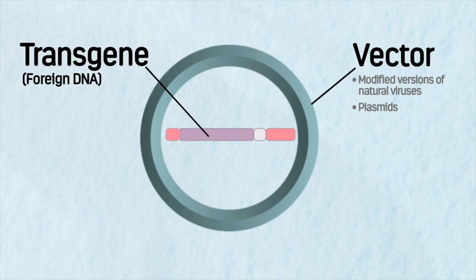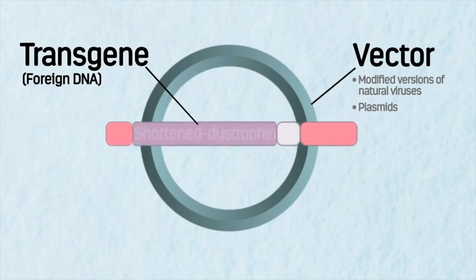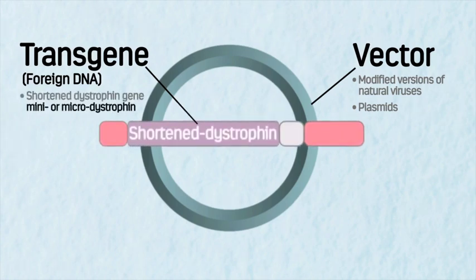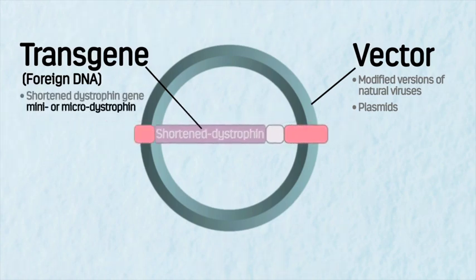In Duchenne muscular dystrophy, or DMD, the transgene consists of a shortened dystrophin gene known as mini or microdystrophin. The preferred vectors are DNA viruses,